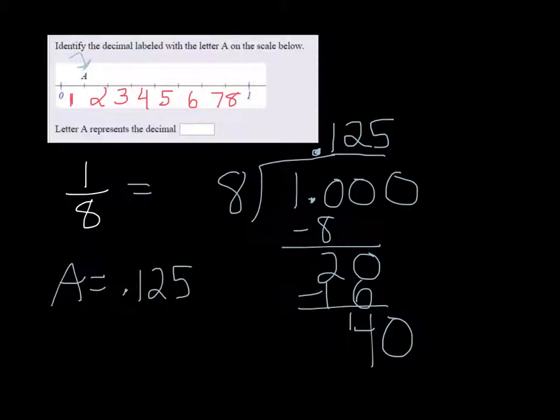Now let's consider another letter just in case it comes up. So suppose that it gave you the letter B and B was right here. I wrote B in red there.